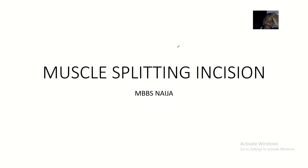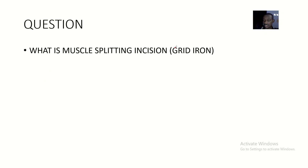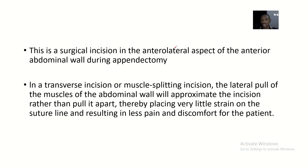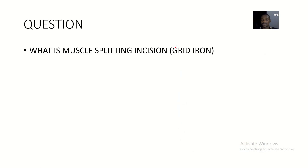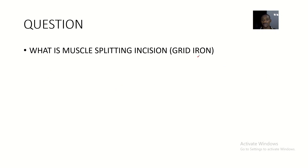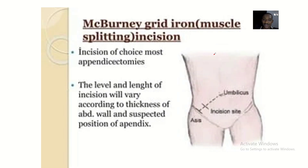Hey guys, I'll be talking about muscle split incision, which is a common incision for appendicitis. That's the incision you do in surgery to remove the appendix — an inflamed appendix. The type of incision done in this surgery is called muscle split incision, or the gridiron incision.